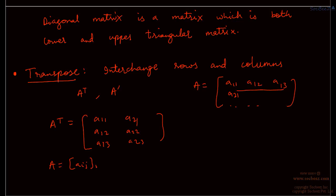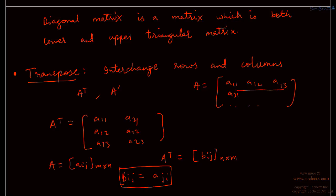In compact form, if A is Aij of order M cross N, then A transpose is Bij of order N cross M, where Bij equals Aji. So you write all the elements this way, and what you obtain is the transpose of the matrix.